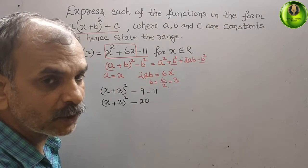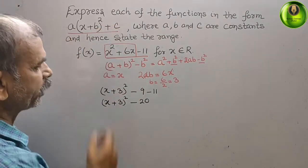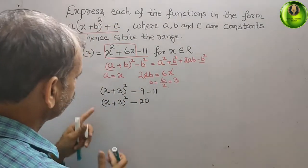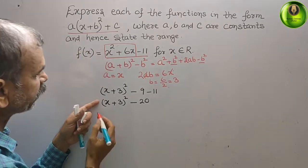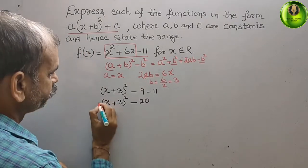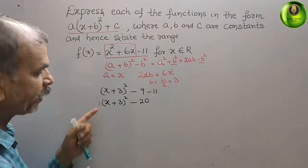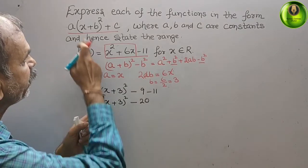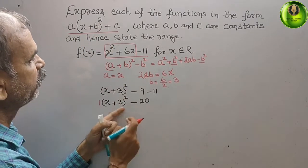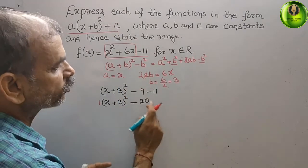This is now in the required format. The coefficient in front is 1, so a = 1, b = 3, and c = -20.